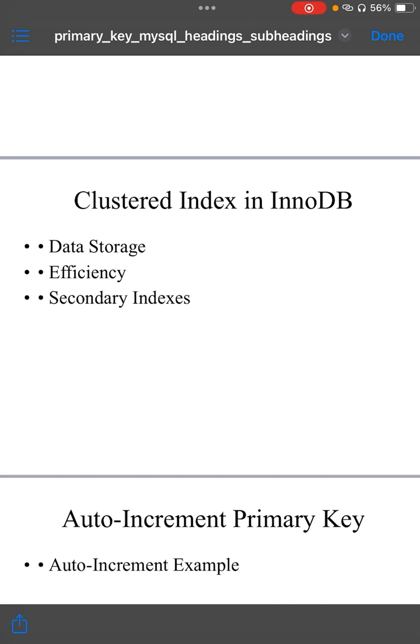Efficiency. Searching by primary key is very efficient in InnoDB because the primary key is stored as part of the index, and B-tree structure allows for logarithmic time complexity O(log n) even in large datasets.